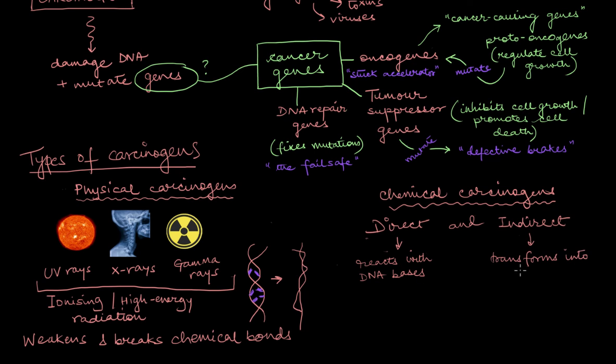For example, mycotoxins, or the toxins which are produced by fungi. Now when we ingest these toxins, they get activated by the cytochromes which are present inside of us. And then these mycotoxins transform into carcinogenic compounds which will go ahead and mess with the guanine bases of our DNA.